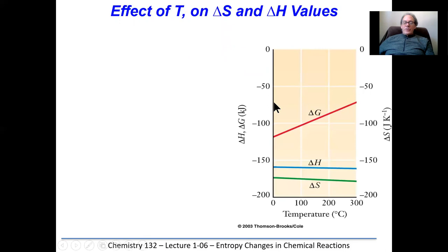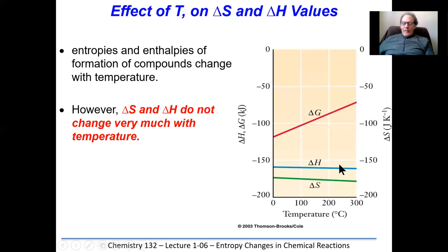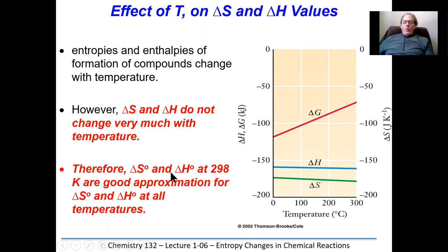Let's look at the effect of temperature on delta S and delta H values. On this graph, delta H hardly changes with temperature, delta S hardly changes with temperature, whereas Gibbs energy changes quite a bit. We can use tables to figure out delta S and delta H at 298 Kelvin, and those values will be pretty good approximations at all temperatures. So delta H and delta S are temperature independent, whereas delta G is temperature dependent — we'll look at that in lecture 107.